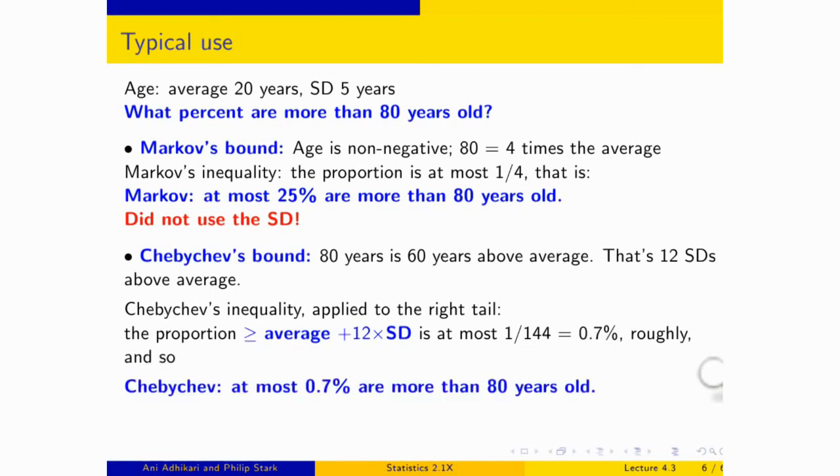And so if you're going to be very careful and even look at this edge, which I know some of you are doing because our question says more than 80 years old and the bound is on more than or equal to, you recall from our previous discussion that dropping the equality preserves the inequality. And so we have that at most 0.7 of 1% of the people are more than 80 years old, and that's a very, very tiny percent compared to Markov's bound of 25%. So in the battle between student and teacher, the teacher wins. This is a much better bound by Chebyshev.